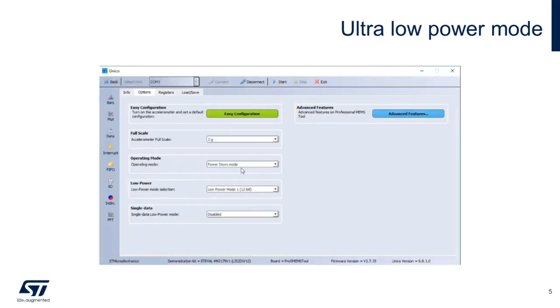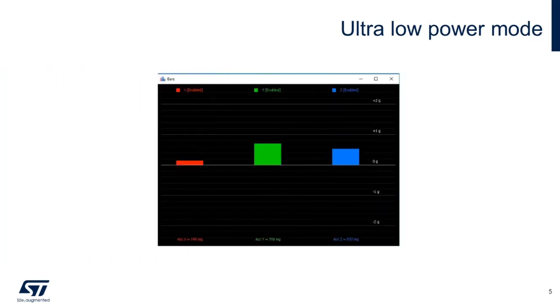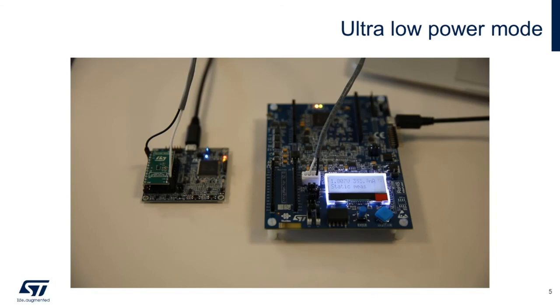Now let's take a look at the ultra-low power mode capability of the LIS2DW12. We're going to open up Unico and take a look at the different operational modes. In this case, we are switching from power down mode to low power sampling at 1.6 Hz. As you can see, I'll enable the bar graph so we can visualize the sensor data flowing through the PC. Under that condition, we are actually having an ultra-low current consumption capability of the device itself. We are talking about close to 380 nanoamps of current consumption, being extremely power effective for any IoT application.